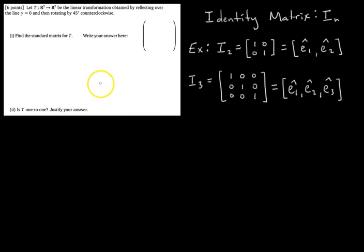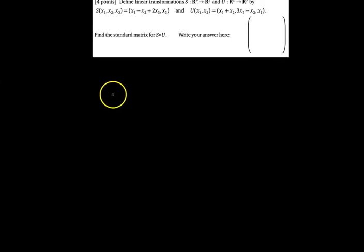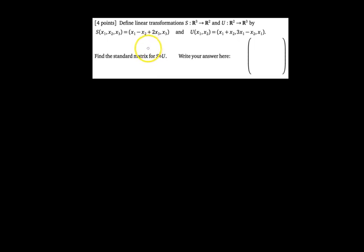We're going to solve two problems in this video. The first one has a transformation described geometrically, and we have to find the standard matrix for that transformation. As a bonus, we'll see if that transformation is one-to-one. The second problem gives us two transformations S and U, described so that we know the components of the output vector in terms of the input vector, and we want to find the standard matrix for both and then for S composed of U.